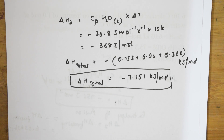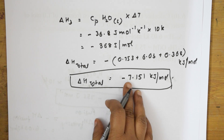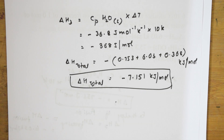The negative answer tells us that heat is released in the process of cooling or freezing — that's why we get a negative ΔH sign. Thank you for watching students; I'll meet again from question 11 to question 15.